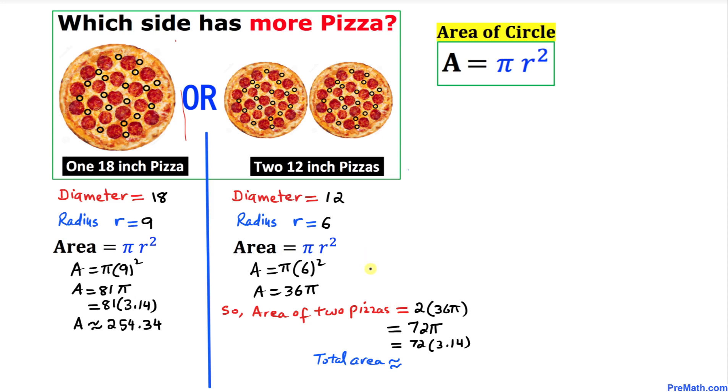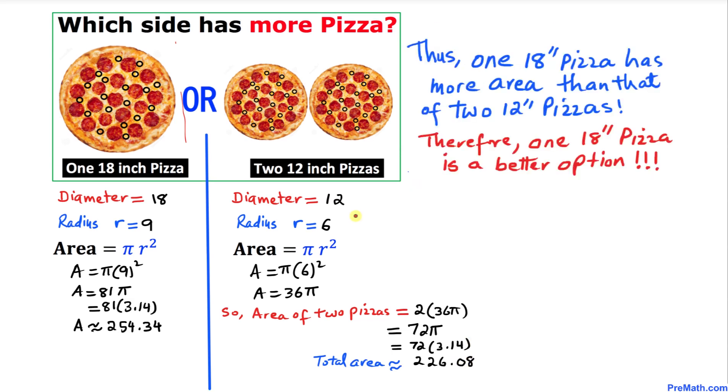Thus, the total area of these two 12-inch pizzas turns out to be approximately 226.08 square inches. So we conclude that the one 18-inch pizza has more area than the combined area of these two 12-inch pizzas. Therefore, one 18-inch pizza is a better option!